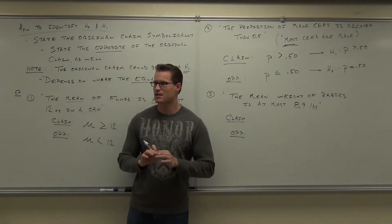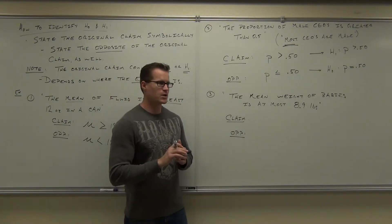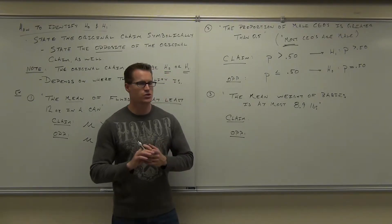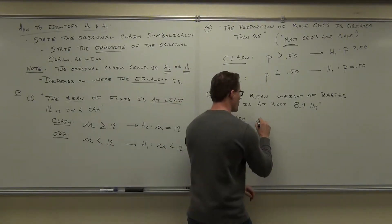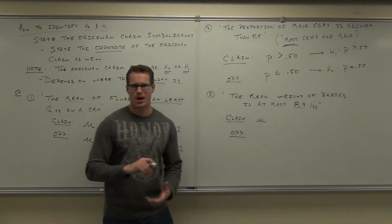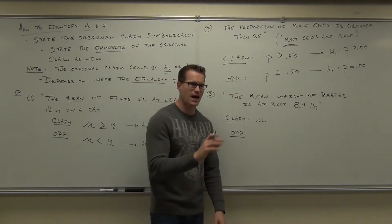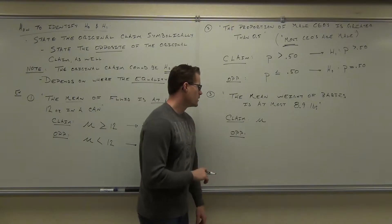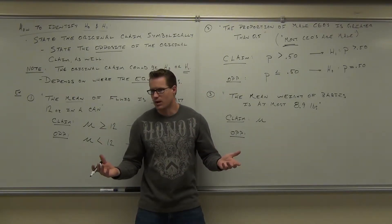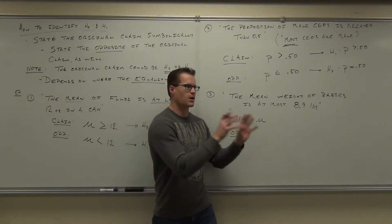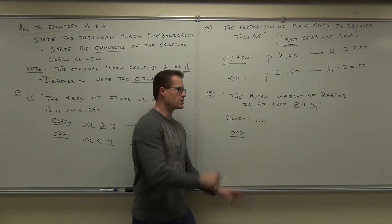Of course we're going to try to state the claim and state the opposite of the claim. So first thing you have to be good at is identifying whether you're dealing with a proportion or a mean. Which are we dealing with here? Definitely mean. So you're talking about population parameters, mean or p. Not p hat, not x bar. The reason is you already know everything about x bar. It's a sample. What you don't know about is population stuff. These claims are about populations.